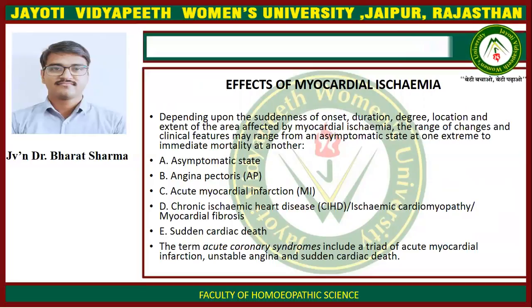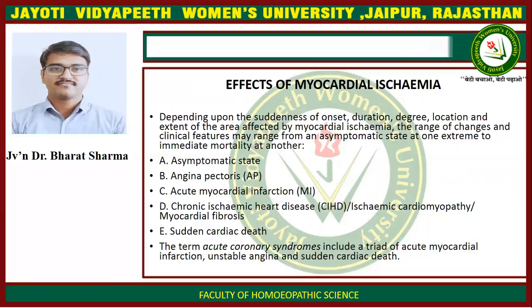Effect of myocardial ischemia: depending upon the suddenness of onset, duration, degree, location, and extent of the area affected by myocardial ischemia, the range of changes and clinical features may range from an asymptomatic state at one extreme to immediate mortality at another. The spectrum includes: first, asymptomatic state; second, angina pectoris; third, acute myocardial infarction; fourth, chronic ischemic heart disease or ischemic cardiomyopathy or myocardial fibrosis; and last, sudden cardiac death. The term acute coronary syndrome includes a triad of acute myocardial infarction, unstable angina, and sudden cardiac death.